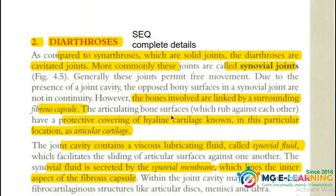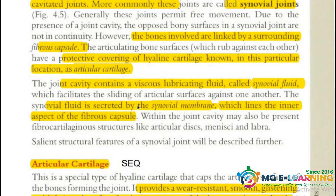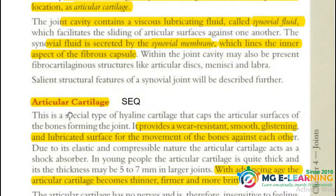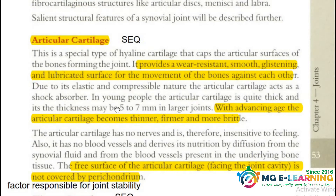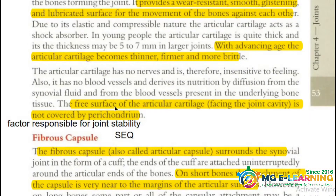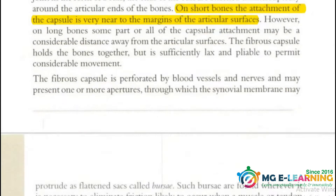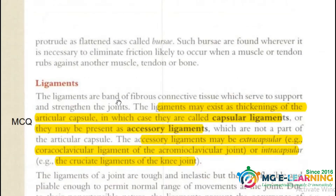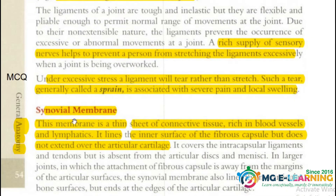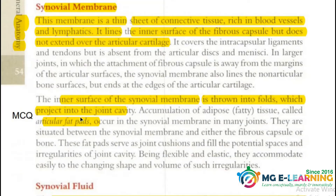Next is the complete detail about the synovial joint, which is a very important topic. You may be asked to write a note on the synovial joint, so you have to write about the structure, which includes articular cartilage, fibrous capsule, and ligaments — all important for your MCQs. The synovial membrane is also part of the structure.